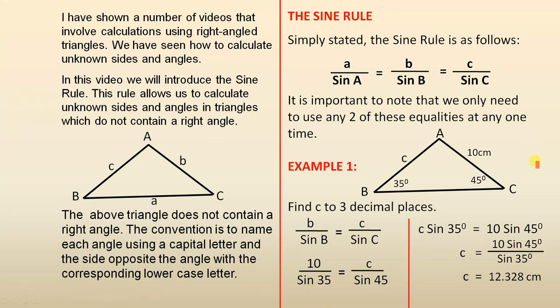Now example one will illustrate this. We have to find c to three decimal places. So the sine rule says that b over sine B equals c over sine C. Substituting into that formula we get this line. Cross multiplying we get that line.